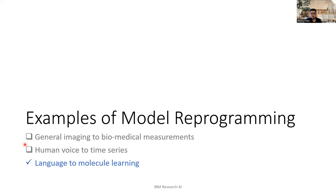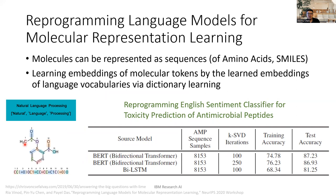The third example is reprogramming language models for molecule learning. Molecules can be represented as strings of molecular characters, creating a natural similarity to spoken language like English. We apply reprogramming by using English embeddings to represent molecule token embeddings through a dictionary learning procedure. Once we represent a token embedding of a molecule as a sub-linear combination of English vocabularies, we can reprogram a sentence classifier to do toxicity prediction for antimicrobial peptides. Even in this limited data setting, we achieve high accuracy compared to the best-known classifier.